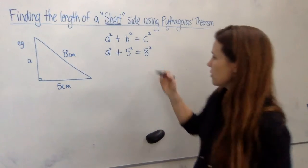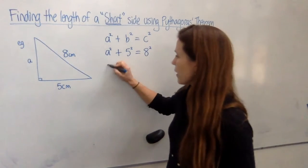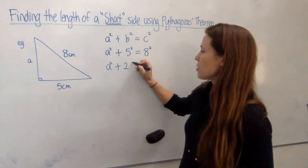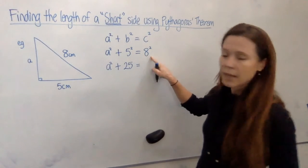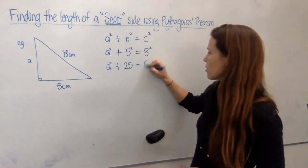Okay, on the next line let's work out what 5² and 8² actually are. 5² is 5 fives which is 25, and 8² is 8 eights which is 64.